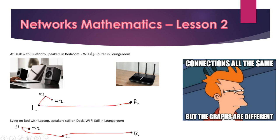Here's a simple practical example: at home you've got your laptop and two speakers close to the laptop, and in the lounge room you've got the Wi-Fi router, letter R. Now if you lie down on your bed with the laptop and leave the speakers on the desk, the shape of this little network changes. The speakers are still close together but you're now on the other side of the room — two different diagrams because L switches position. The connections are all the same but the graphs are different.